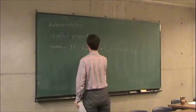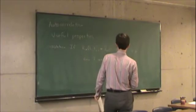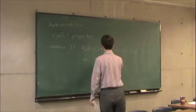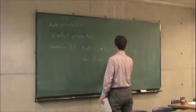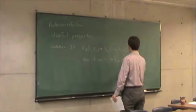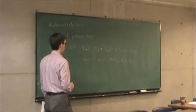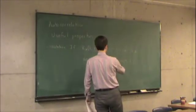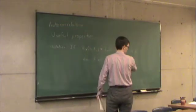Then if alpha is equal to minus T1, I can write Rx is equal to Rx of 0, T2 minus T1. So this makes explicit the fact that the autocorrelation is only dependent on the time difference between T2 and T1.